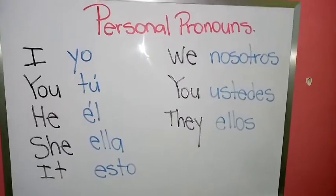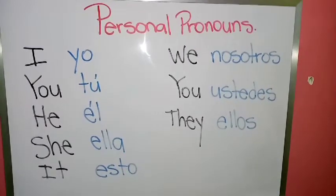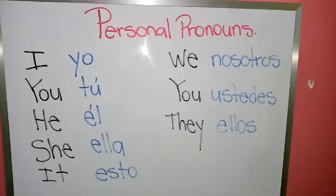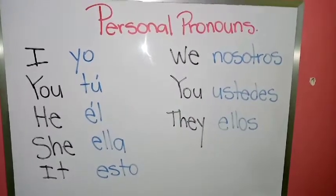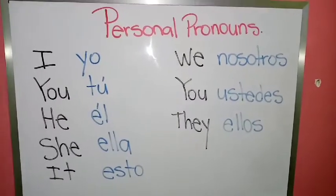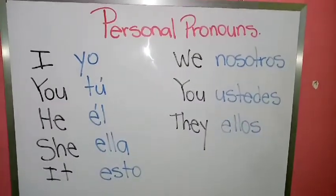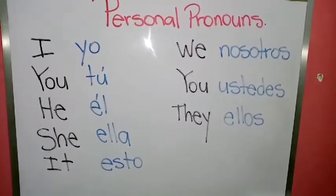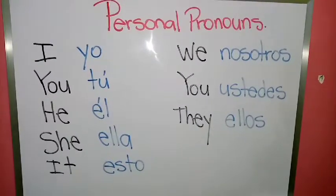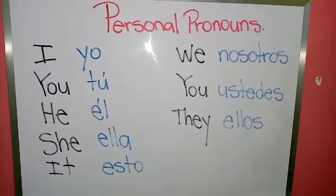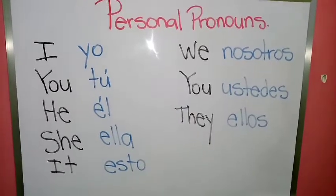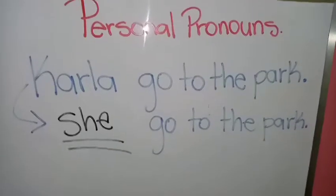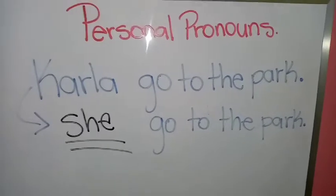Para poder hacer la hoja de trabajo que les voy a enviar con sus papitos: en dos hojas de trabajo, la primera lo que tienen que hacer es encontrar oraciones y van a sustituir el nombre de las personas que aparecen ahí por el pronombre personal que le corresponde. Por ejemplo, si yo les digo: 'Carla fue al parque', entonces podrían decir 'she', porque se refiere a ella, porque es Carla. Entonces va a ser algo similar a esto que están viendo ahorita aquí en la pizarra.